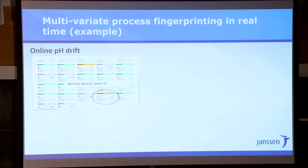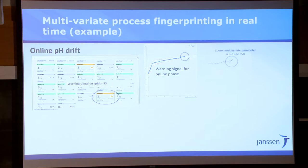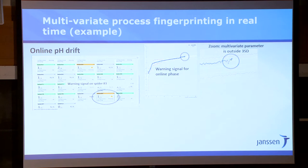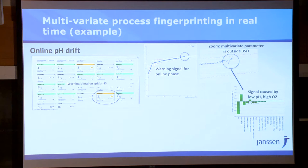We're using more and more this fingerprinting. Here's another example of pH drifting — you start getting out of your plus/minus three sigma and you get the alarm. You can then go into all the variables and it's going to tell you which variables are causing this. The key one here is one particular pH probe that is drifting. We have a backup probe that's still okay, and we have some offline measurements. So we know exactly what to do — we need to just switch out that probe and change it.